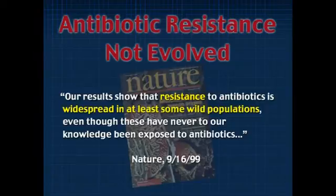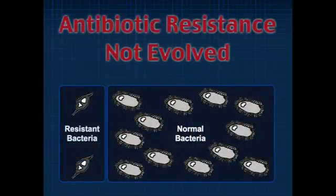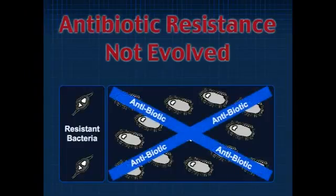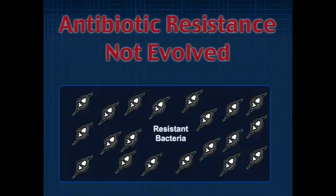Reported in Nature in 1999: resistance to antibiotics is widespread in wild populations that have never, to our knowledge, been exposed to antibiotics. The normal bacteria dominates; there are resistant forms, but they are recessive. The antibiotics kill the normal form, and the resistant form takes over. What has evolved? Has the information content gone up or down? We have lost the major form. We have not evolved anything new. This is a problem that hinders good science in helping us deal with antibiotic resistance, and it is just propaganda for the textbooks.